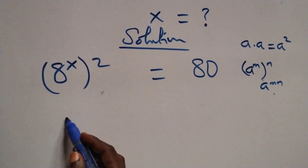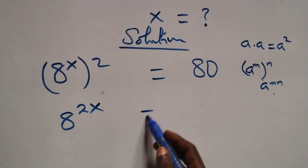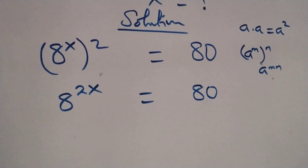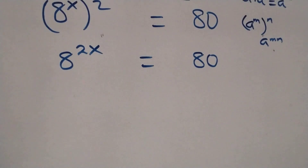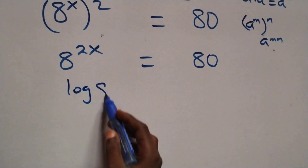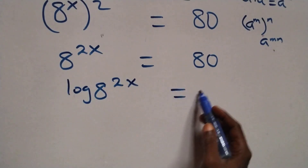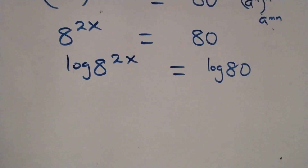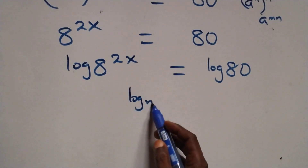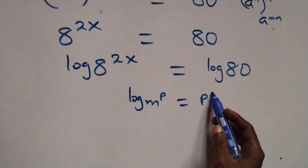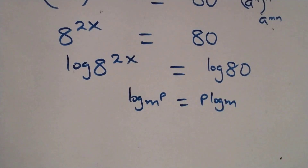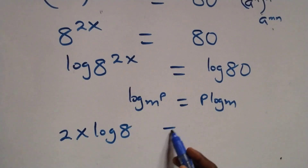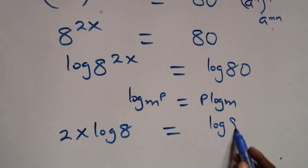So with this power rule, we have a raised to power 2x equals 8t. Then we take the log on both sides: log of 8 raised to power 2x equals log 80. From here we apply the power rule of logarithms — log of m raised to power p is the same thing as p·log m — so what we have becomes 2x·log 8 equals log 80.